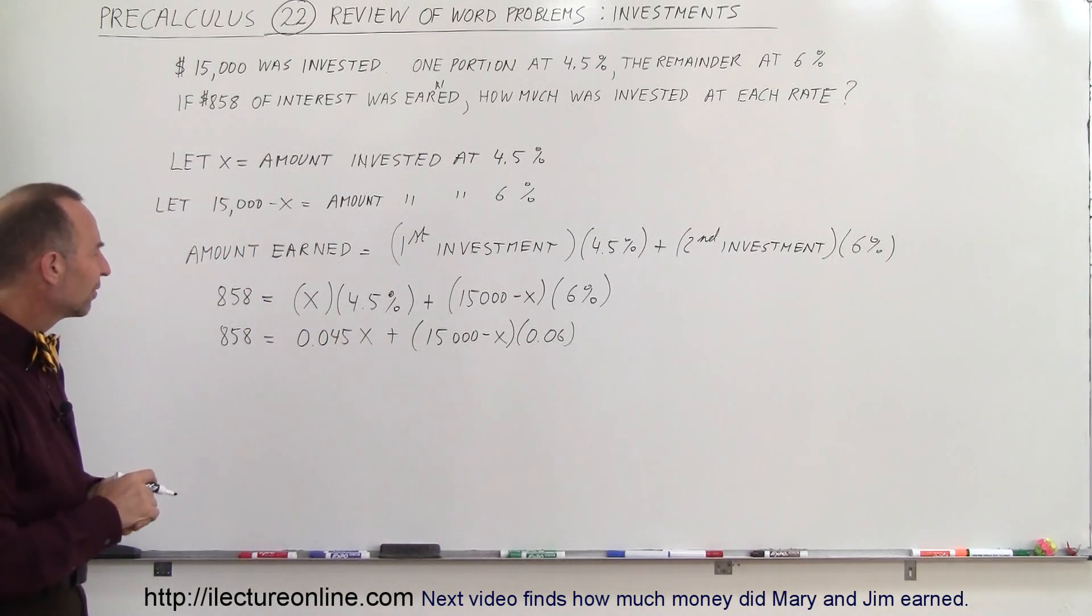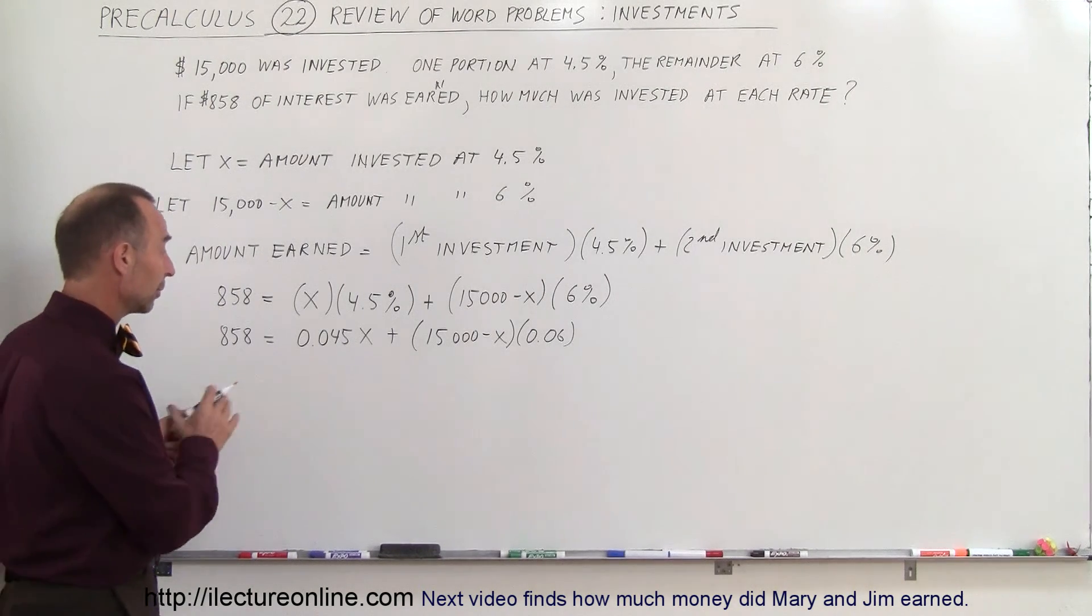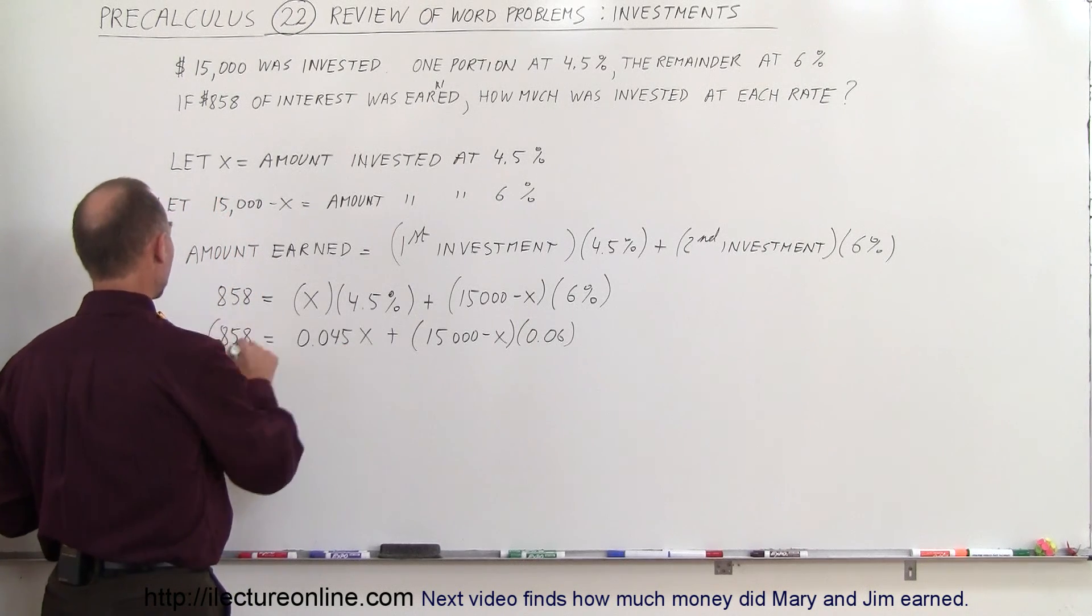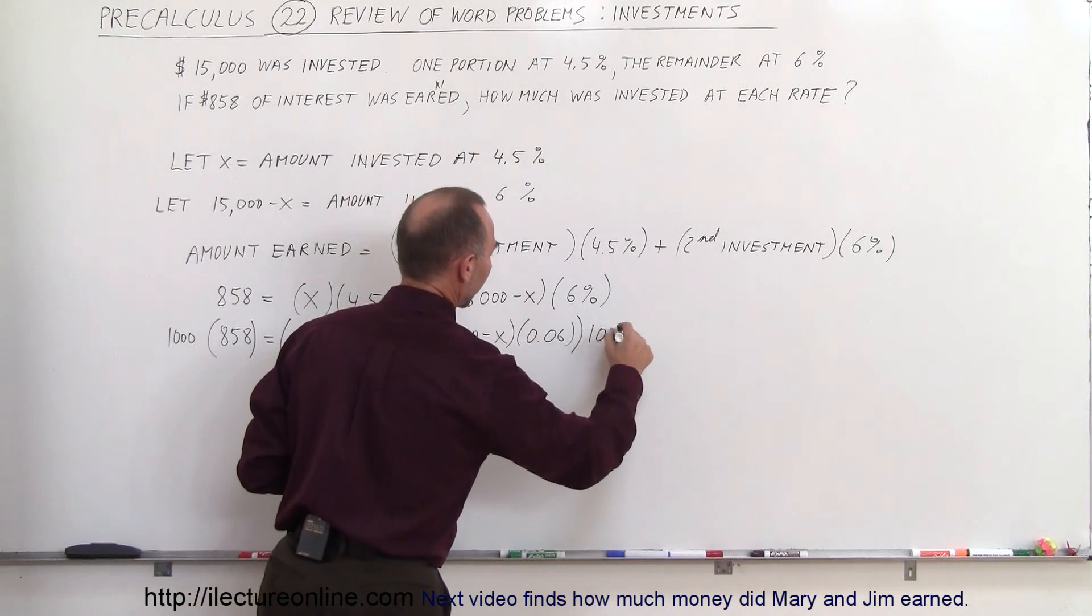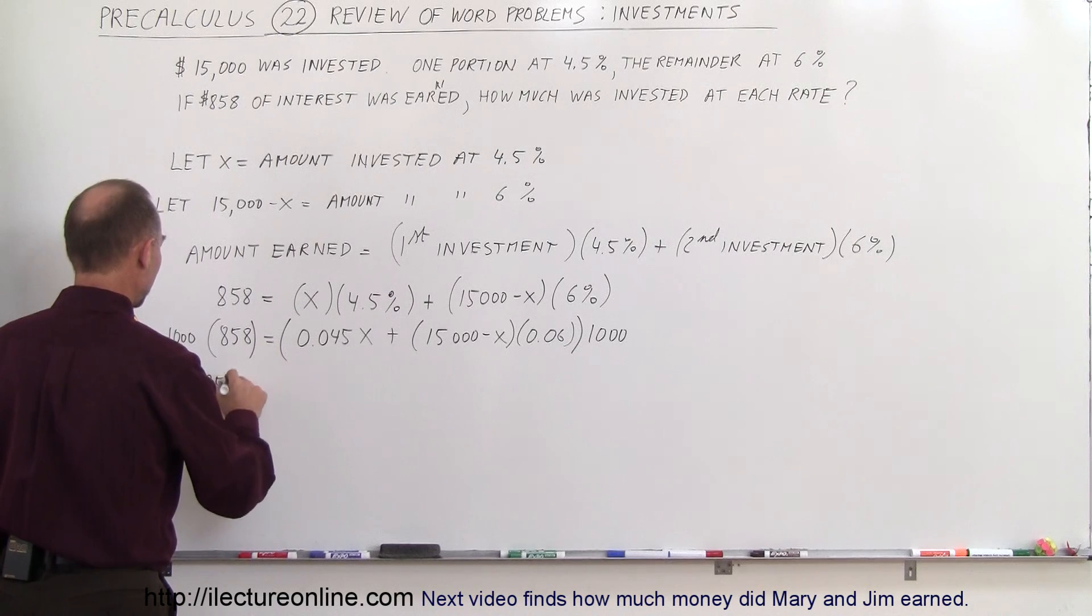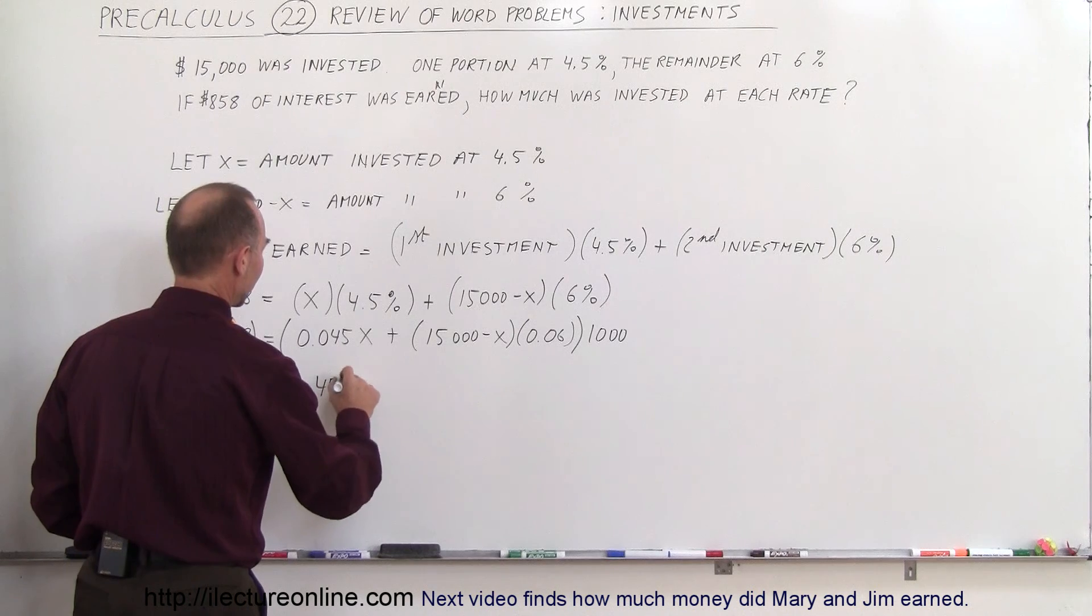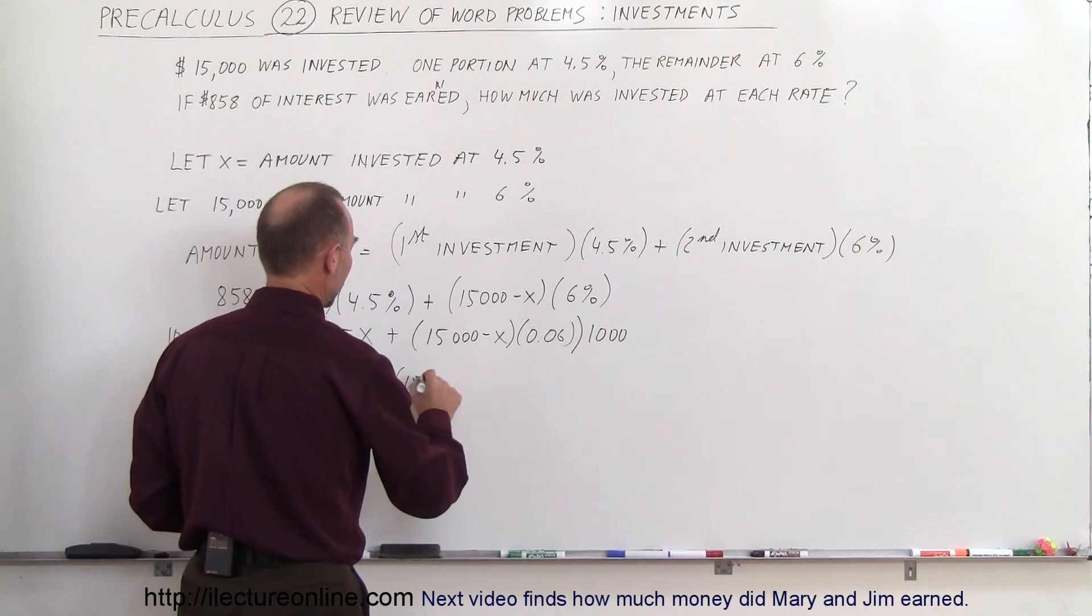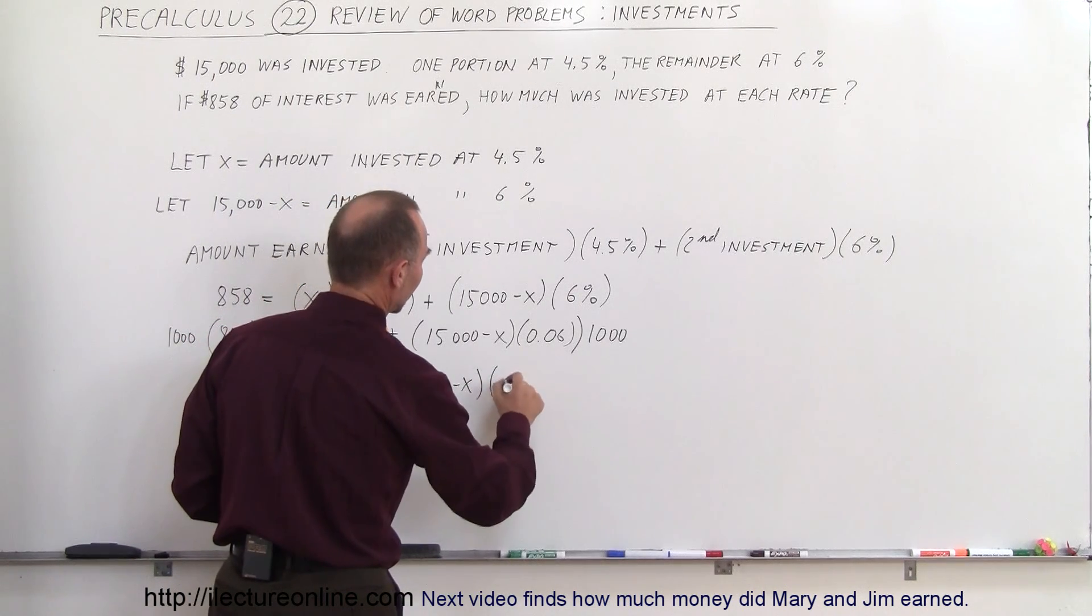The next thing we want to do is get rid of the decimals. We want to have only whole numbers. To do that we're going to multiply both sides by what looks like a thousand. So multiply the left side by a thousand and multiply the right side by a thousand. So now we have 858,000 is equal to 45x plus 15,000 minus x times this times a thousand will give me 60.